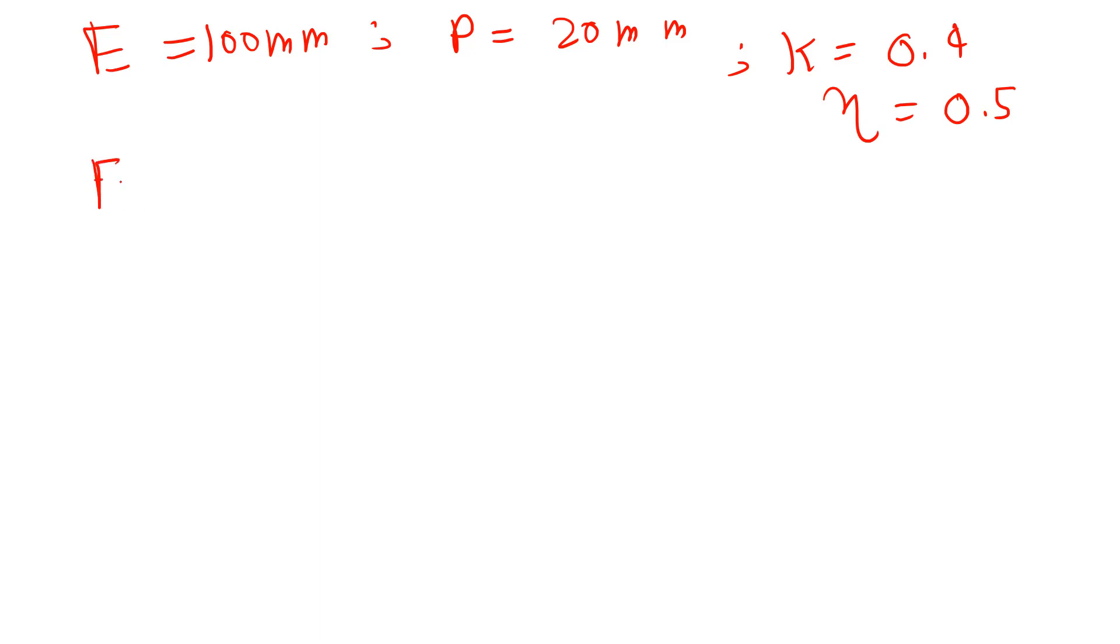So actual evaporation, that is k times the pan evaporation. So k is 0.4, E is 100, so it will come out to be 40 mm. And as we know the precipitation is 20 mm, so water required